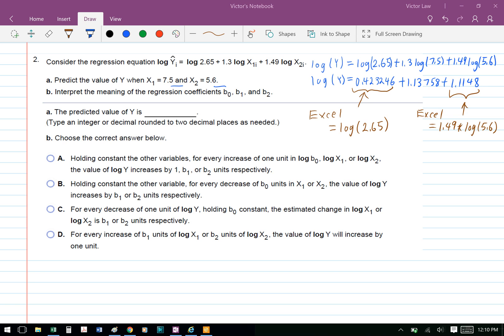For each of the log functions, we're going to use Excel to calculate. We type equals log(2.65) to calculate the first log variable, which gives us 0.423246.